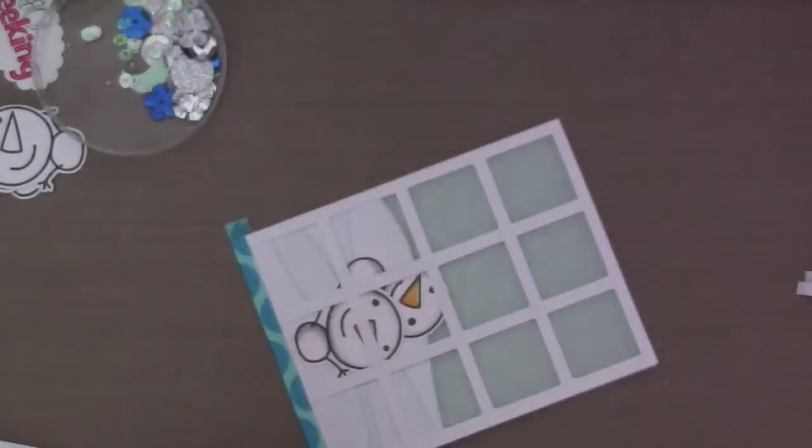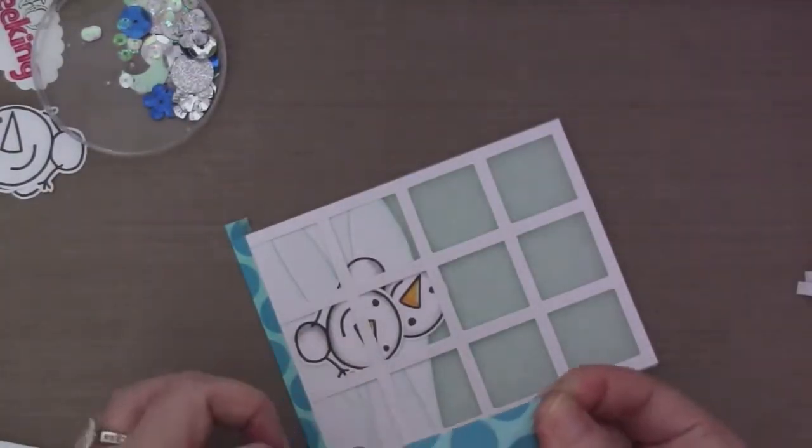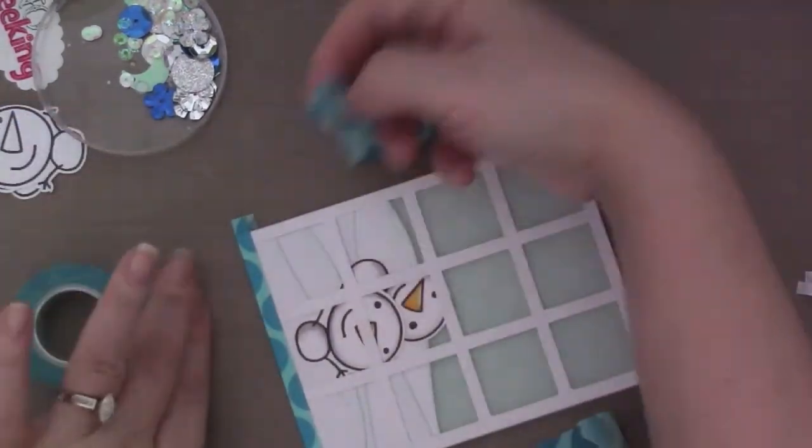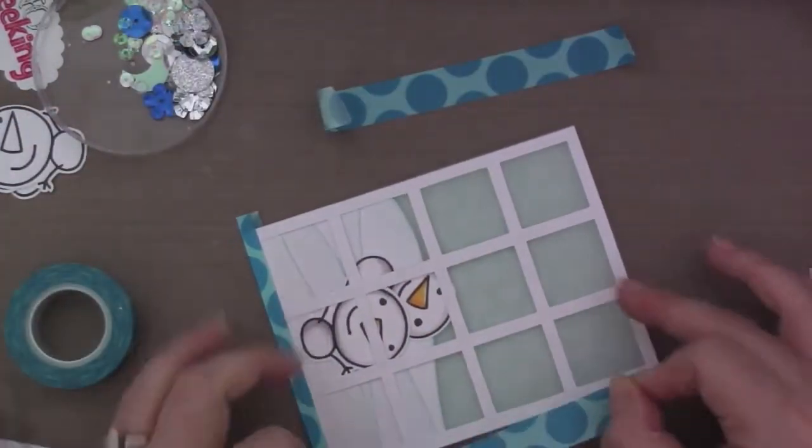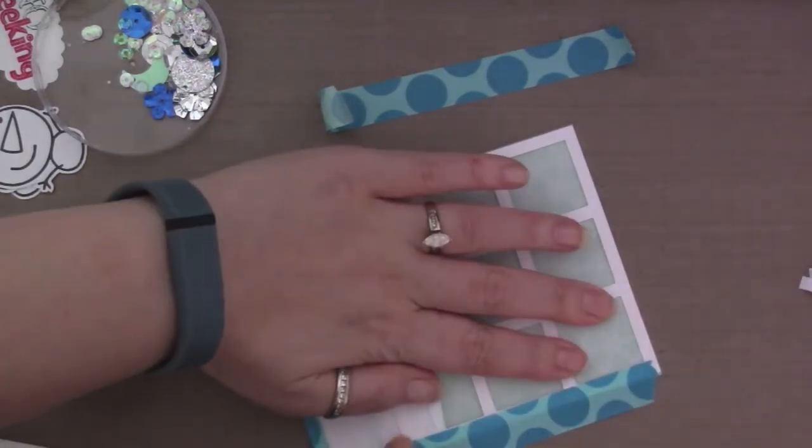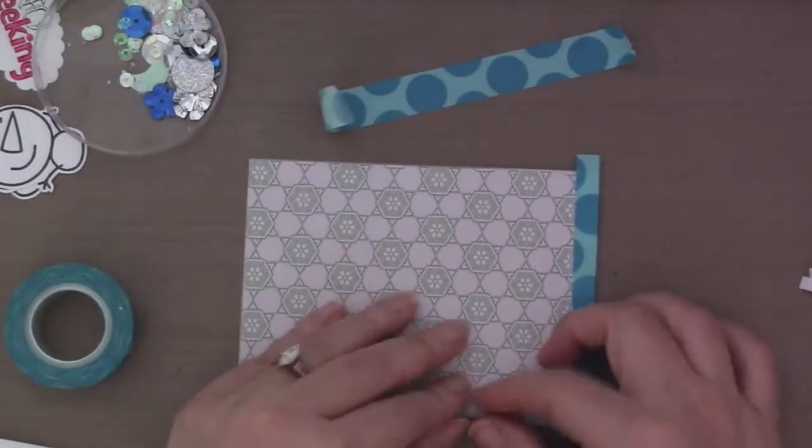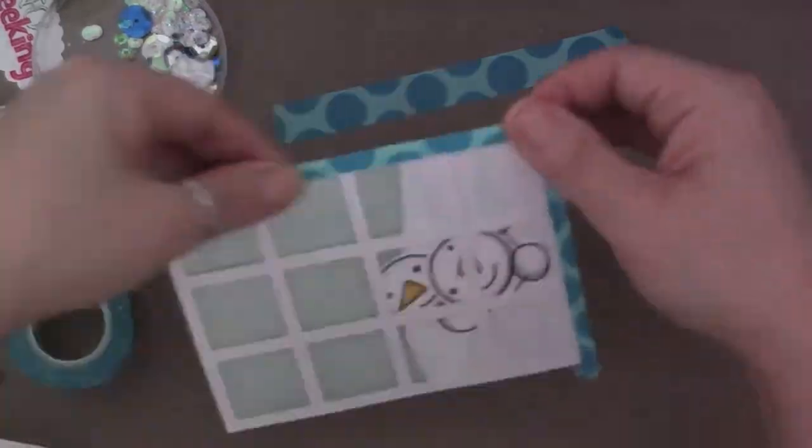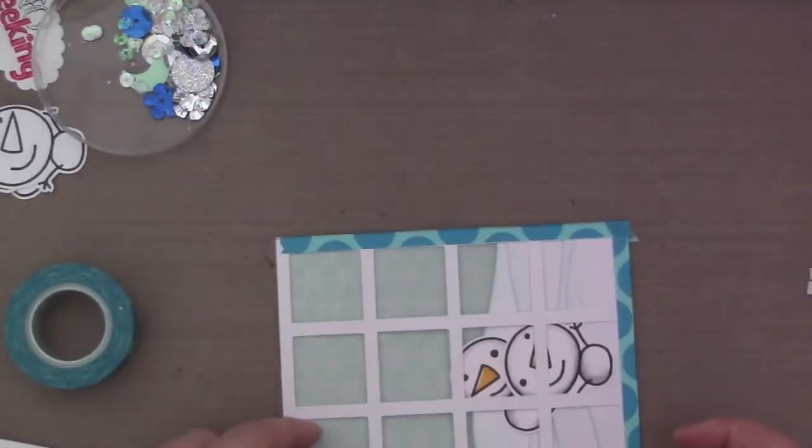And then I'm using some washi tape, and I'm going to seal it all up. All four sides. And that's going to create like a semi-shaker portion.